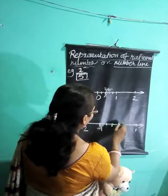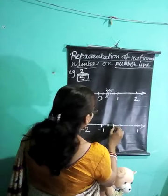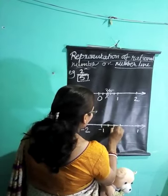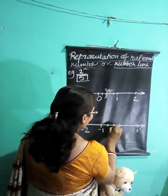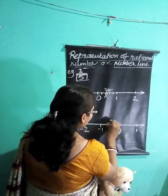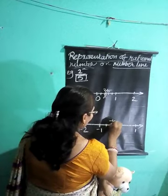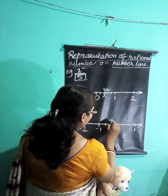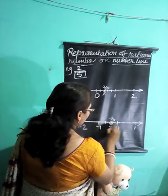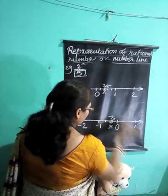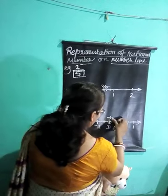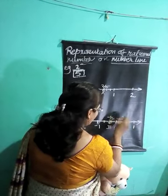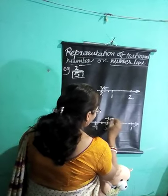Mark it divided into 3 equal parts. Now this is your minus 1 by 3 — after 0 we count 1. This is the first part, so this is minus 1 by 3.